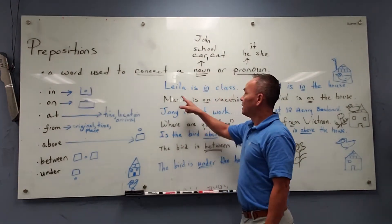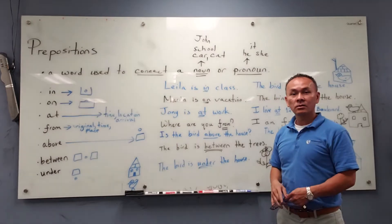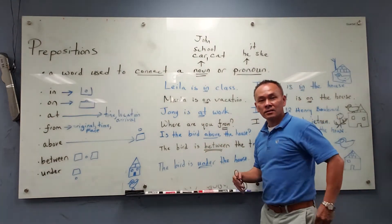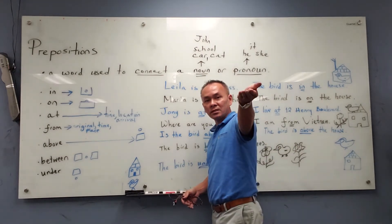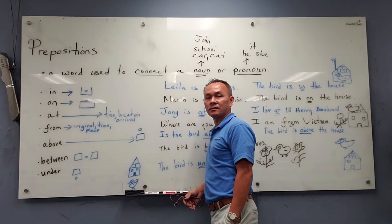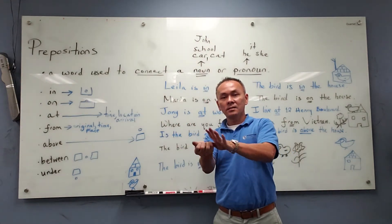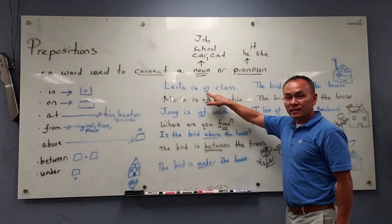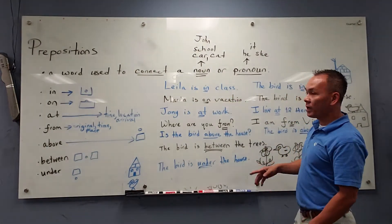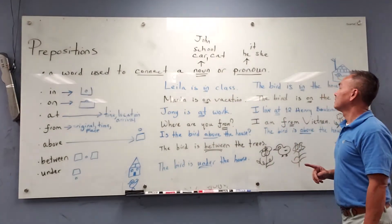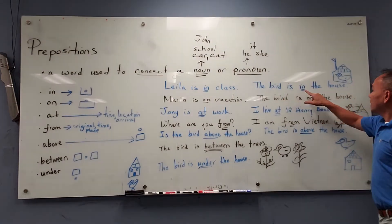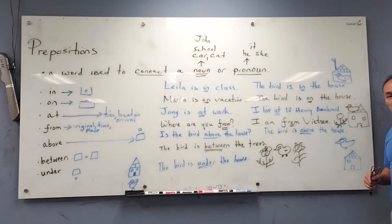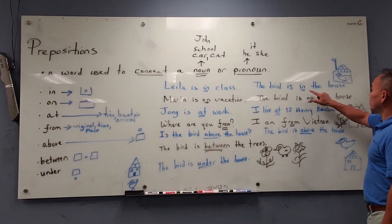For example: Lila is in class. Where is Lila? She is inside. I put the coins in my pocket. The charger is in my hand. Lila is in class — this is a preposition. Where is Lila? Lila is in class. The bird is in the house. Where is the bird? In the house. The bird flies inside the house, so the bird is in the house.